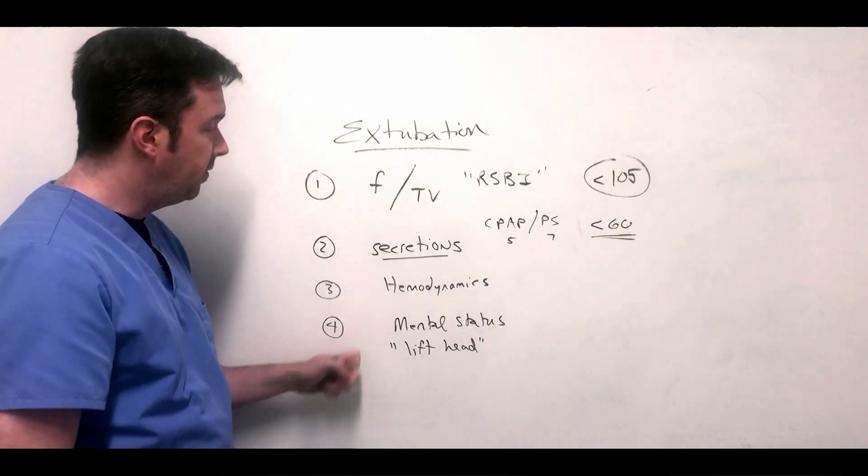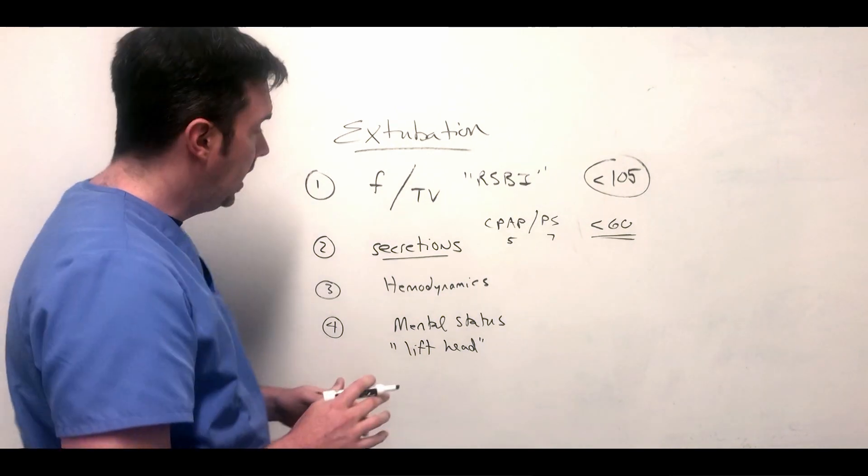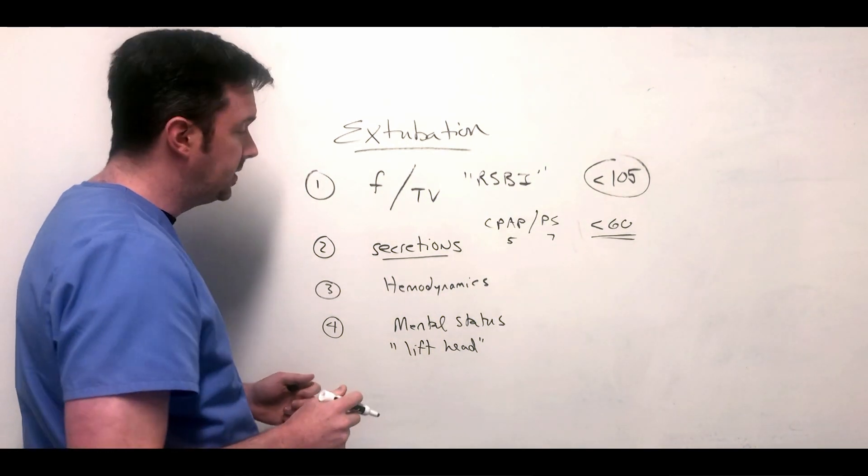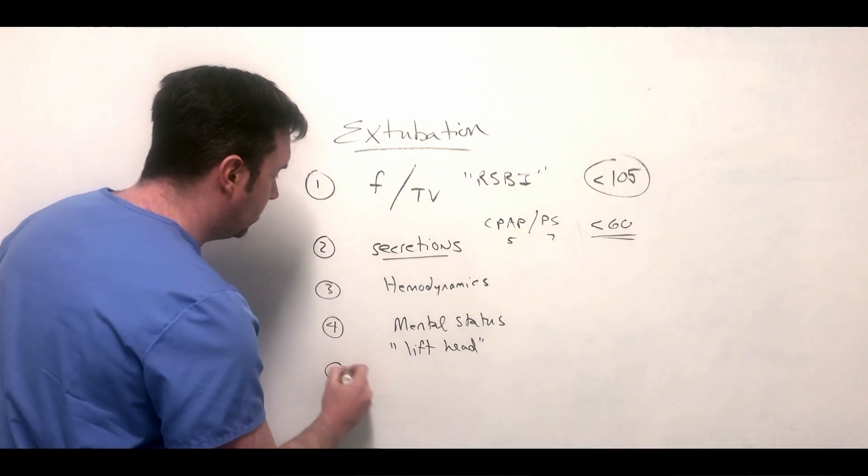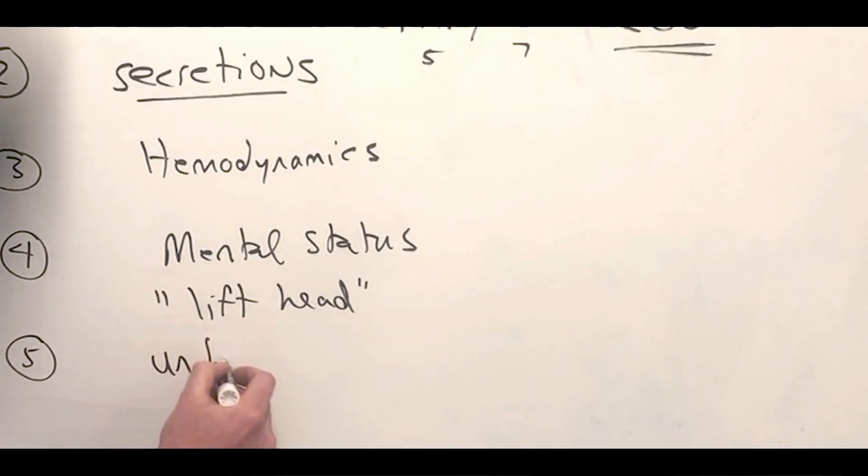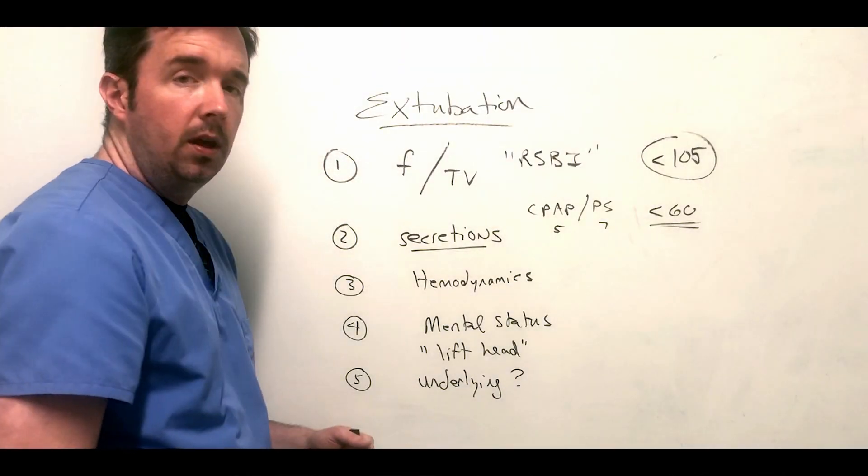Patients who can't lift their head off the bed, whose mental status is really suboptimal - they're very high risk for getting re-intubated. So this is definitely one of our big five that we look for. We like to have patients following commands, lifting their head, and it ties into the fifth criteria.